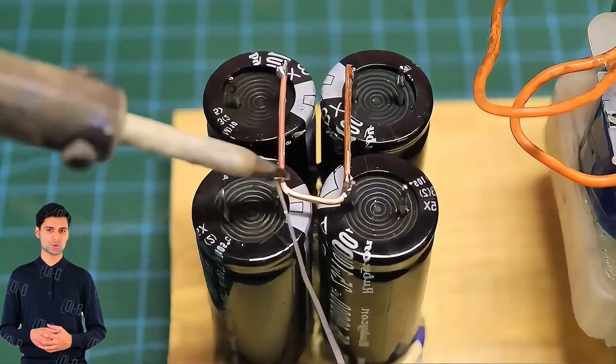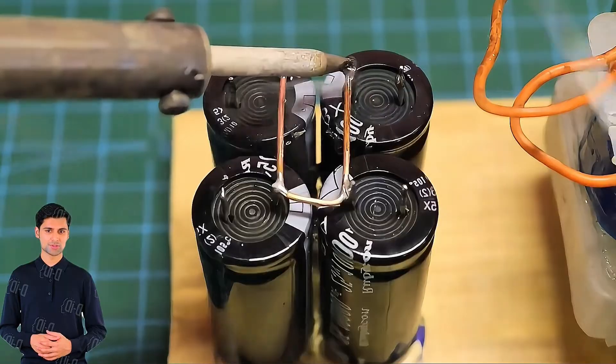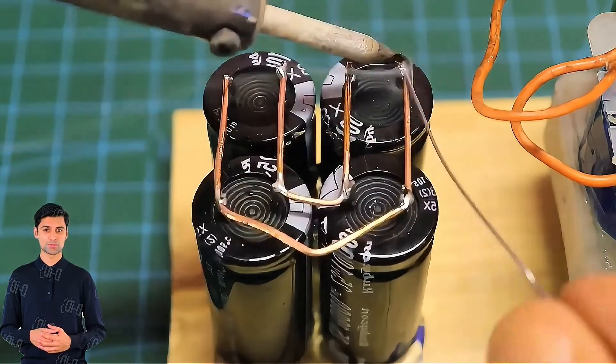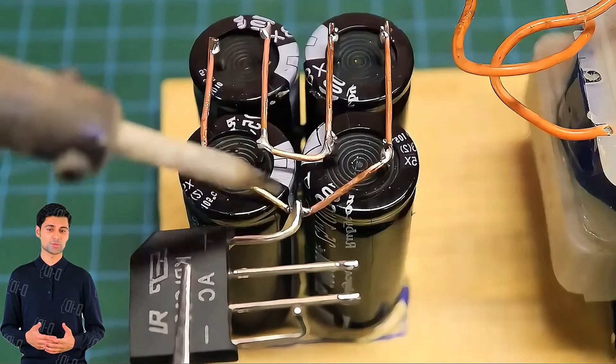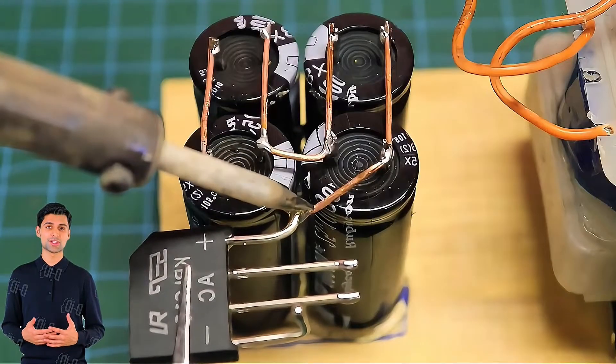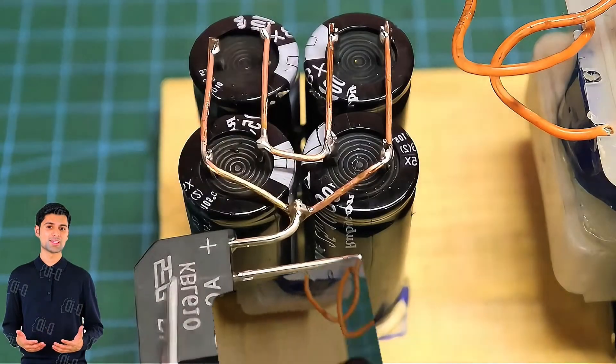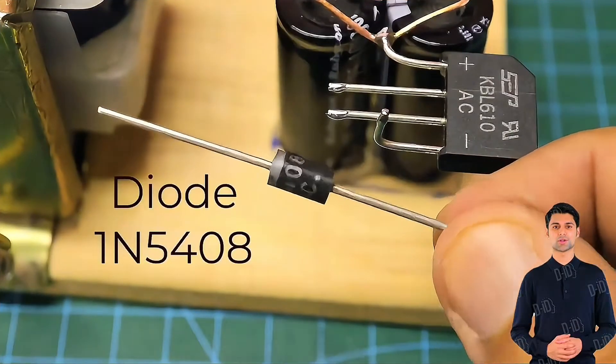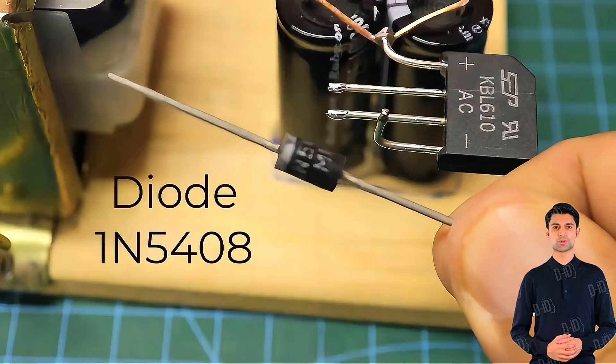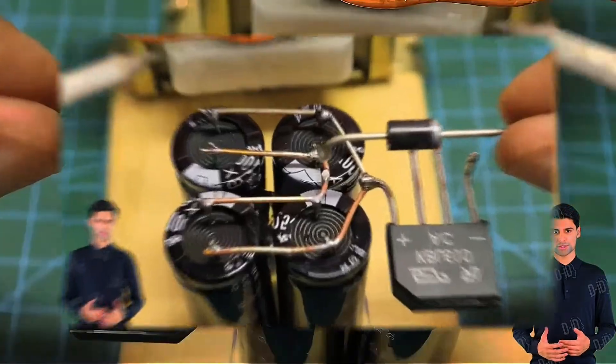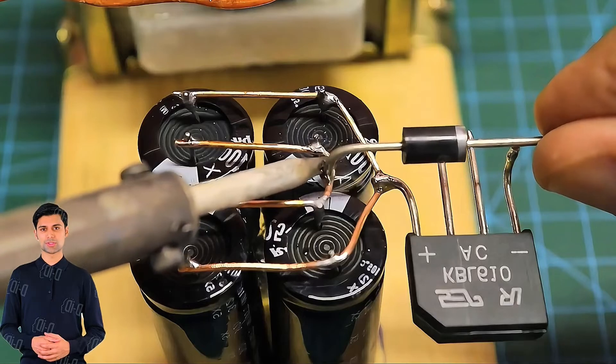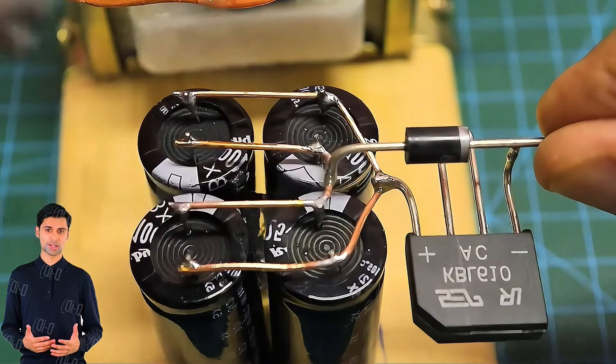Because the discharge current is relatively large, we need to use thicker copper wires for parallel connection. Because the transformer outputs an alternating current, the capacitor cannot be charged directly. So between the secondary output of the transformer and the capacitor, we need to connect a rectifier bridge or a diode to convert the alternating current into direct current to charge the capacitor.